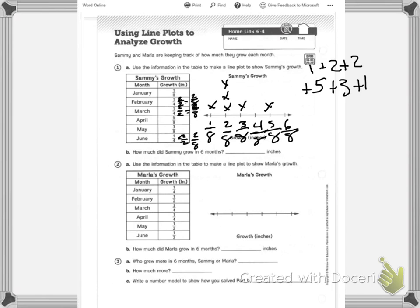13 plus 1 is, I have 14/8ths. So to make my improper fraction not a fraction, I'm going to take a whole away, so I'm going to subtract 8 over 8, and I'm left with 6/8ths. So Sammy grew 1 and 6/8 inches in 6 months.